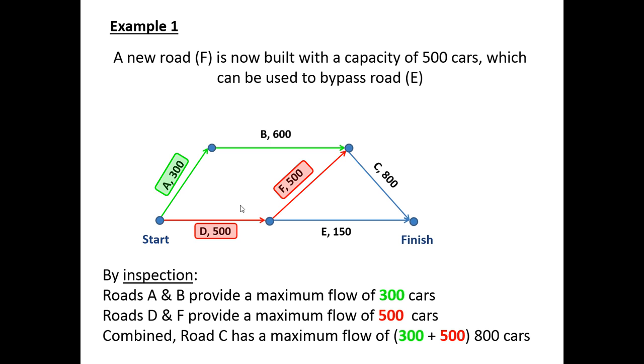So by inspection if we combine A and B which have a maximum flow of 300 when they hit road C, and D and F which also have a maximum flow of 500 by the time they hit road C, they can both be combined, the 300 and 500, to show that road C has a maximum flow of 800 vehicles.